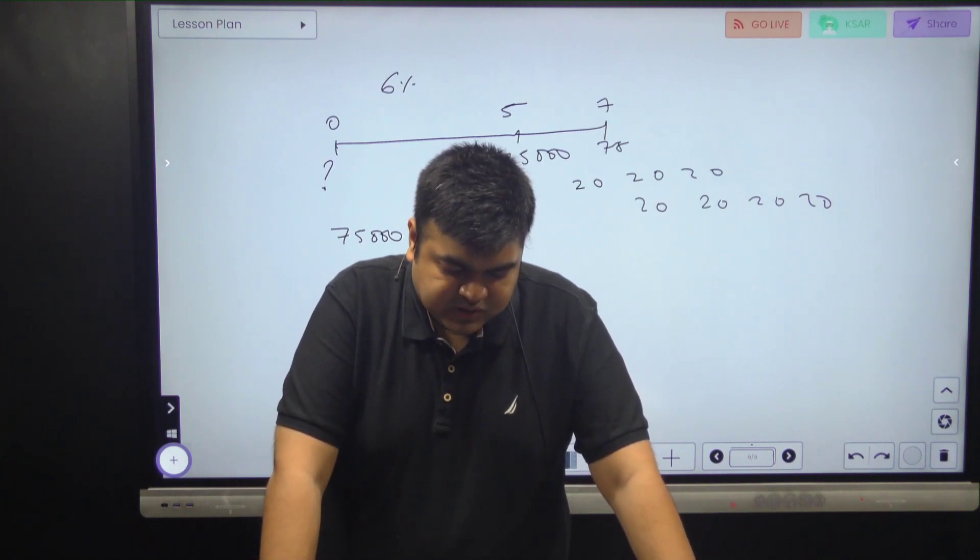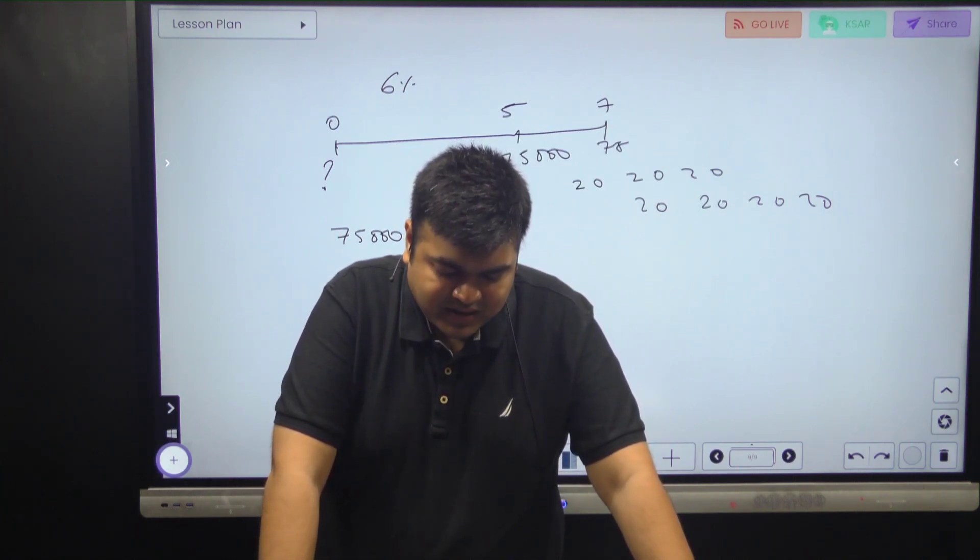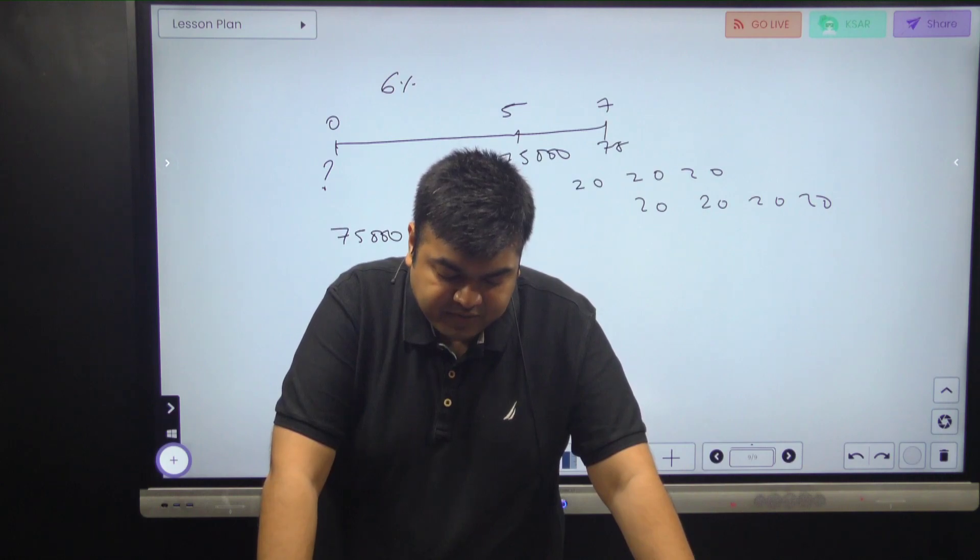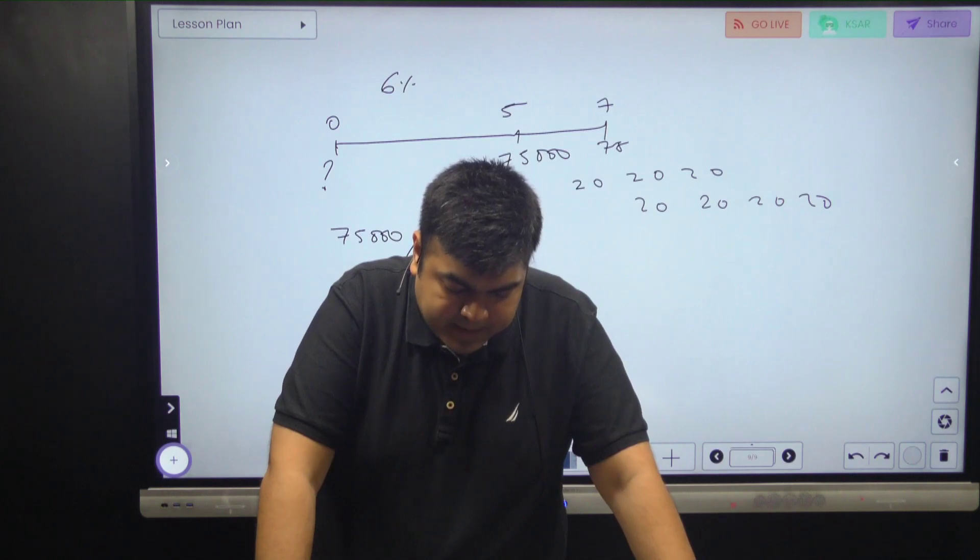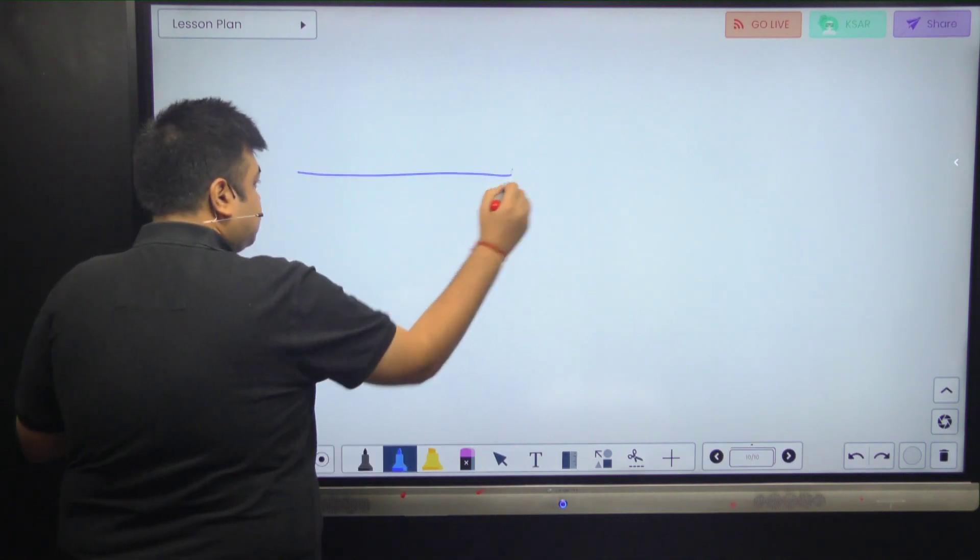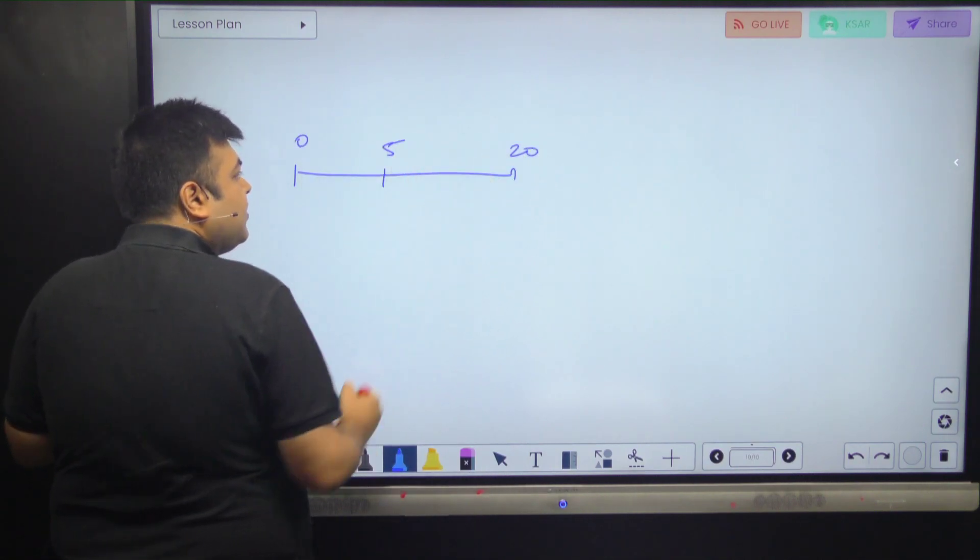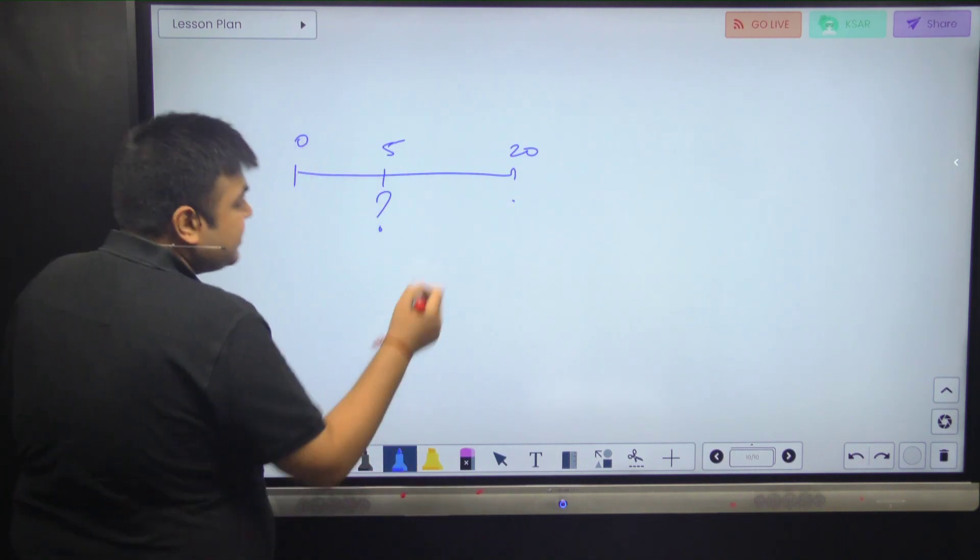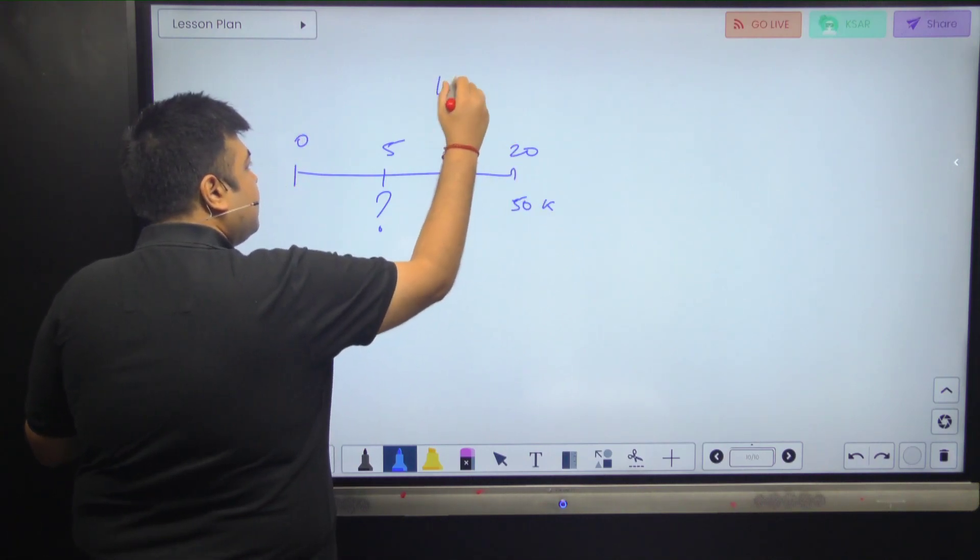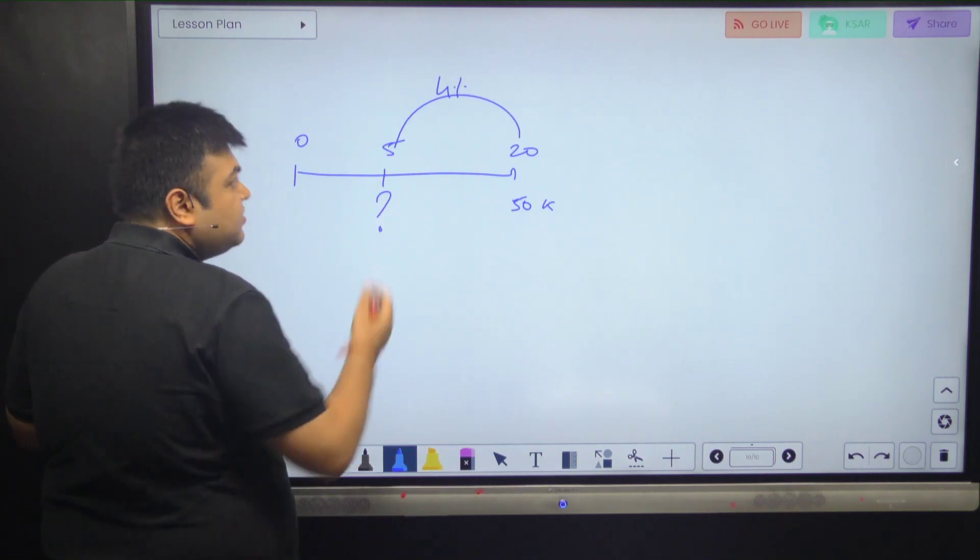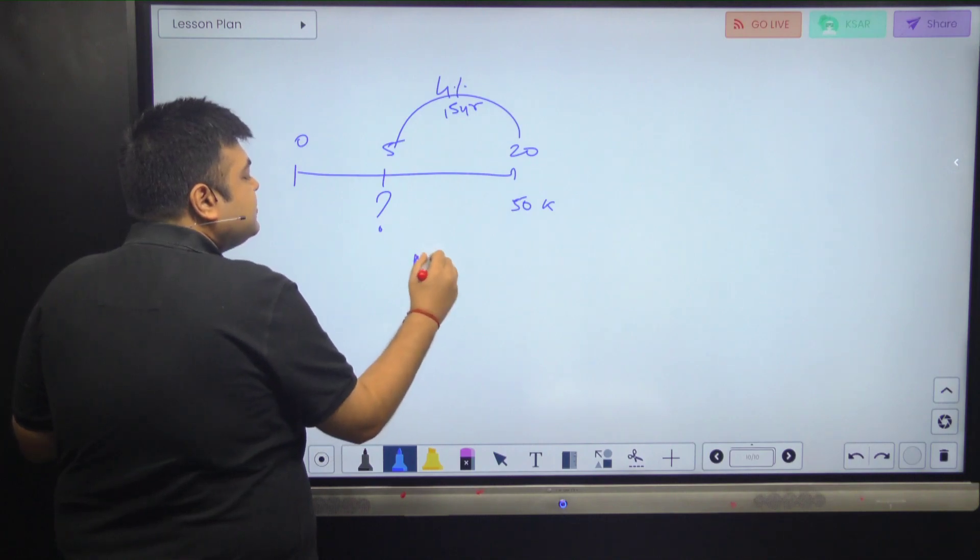Let's move forward. Next question: given the following timeline, discount rate of 4% per year compounded annually, PV as at the end of year 5 of the cash flow received at the end of year 20 is closest to. That's a very bad question. Over here, what is the PV as on this date for $50,000 and the rate is 4%?